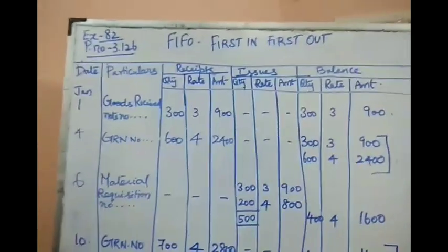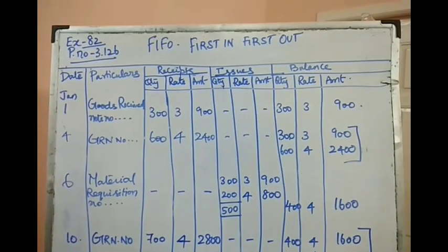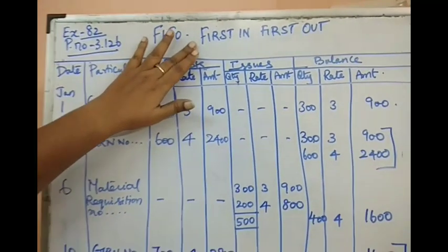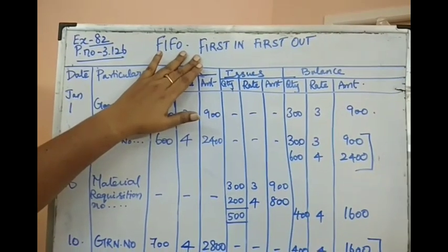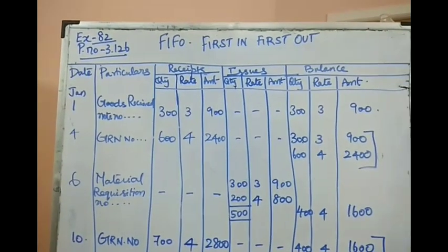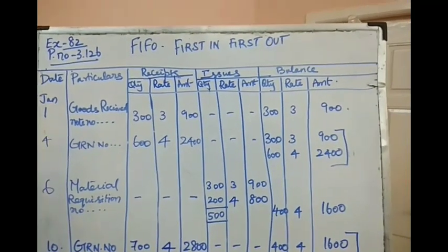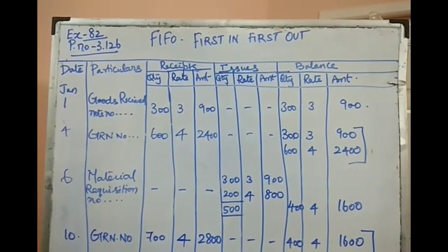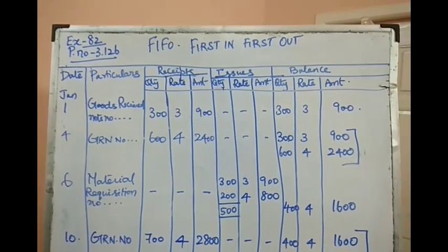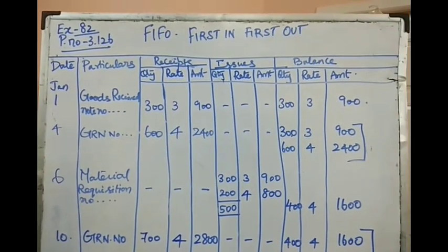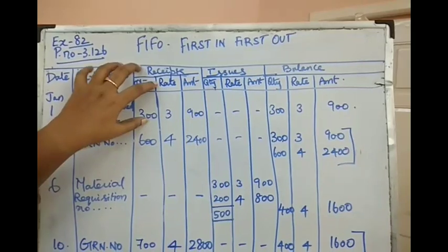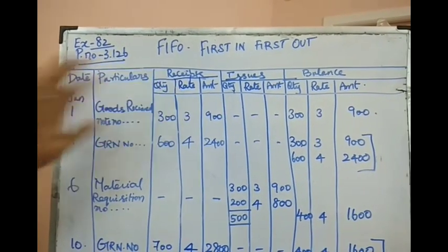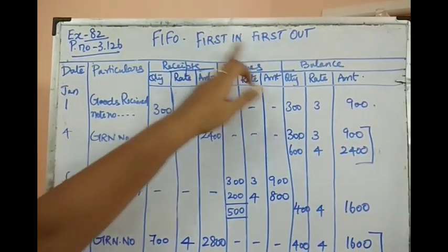FIFO means First In First Out. Whatever materials we have received on the earliest date, those will be issued out first. This depends upon the price fluctuations of the material. If the price is getting increased and demand is increasing, those materials will be stocked until they reach the desired price, then released for production to maximize profit.